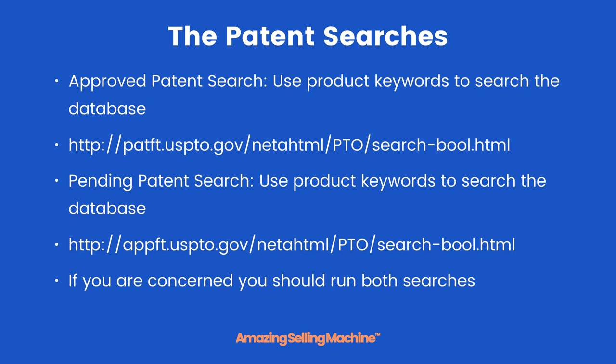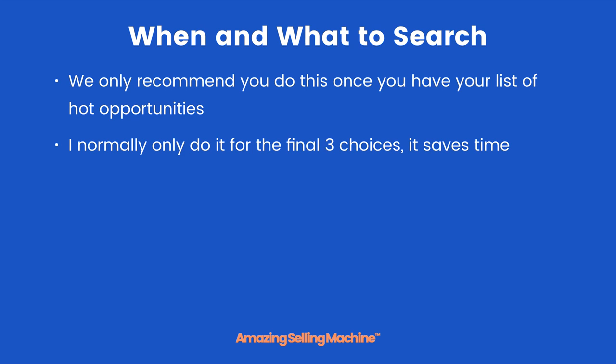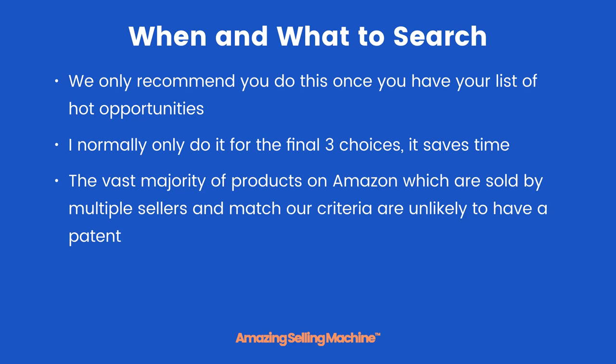We only recommend you do this once you have your list of hot opportunities. In other words, don't waste your time doing a patent search on a product that you haven't verified is a viable product. I normally only do it for the final three choices — it saves time. If after your first product is up and running and you want to go back to your hot opportunity list and choose one of the products on that list, then run the patent search if you're concerned.